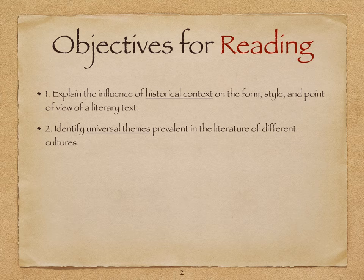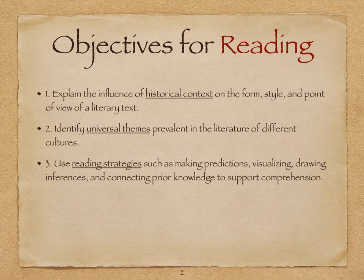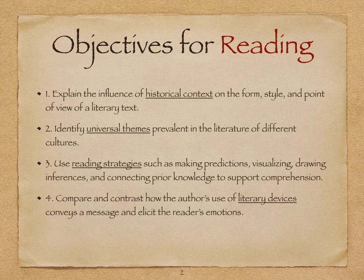I want you to be able to identify some universal themes in Antigone, which is really important because later on we're probably going to find the same themes in a Shakespeare play and possibly have to compare them. We always want to use reading strategies like making predictions, visualizing, and drawing inferences, because sometimes the language of these plays is hard. The more strategies you use to understand, the better you're going to enjoy the play. Also compare and contrast how the author's use of literary devices conveys a message.